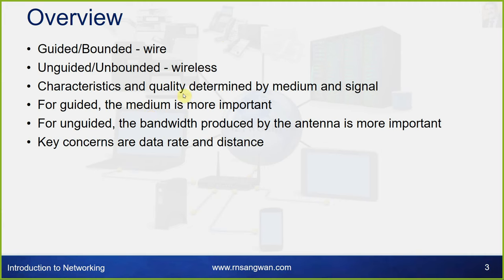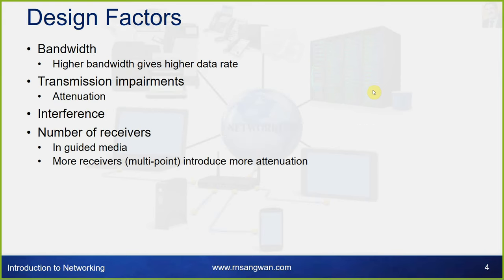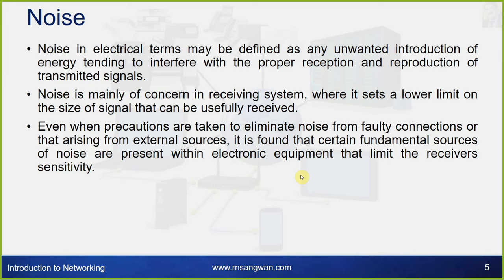Characteristics and quality are determined by the medium and the signal. For guided media, the medium is more important; for unguided, the bandwidth produced by the antenna is more important. Key concerns are data rate and distance. Design factors include bandwidth, transmission impairments, interference, and number of receivers. Higher bandwidth gives higher data rate. Transmission impairments include attenuation, interference, and in guided media, more receivers on a multipoint link introduce more attenuation and noise.